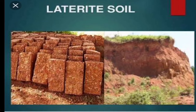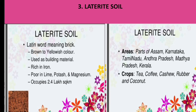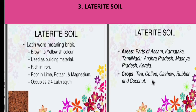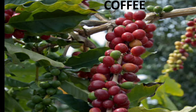Laterite soil: the word laterite comes from the Latin word for brick. It is slightly brown to yellowish in color, is mainly used as a building material, and is rich in iron. Laterite soils are mostly found in tropical regions with alternate wet and dry conditions. Areas include parts of Assam, Karnataka, Tamil Nadu, Andhra Pradesh, Madhya Pradesh, and Kerala. Major crops grown here are tea, coffee, and rubber.